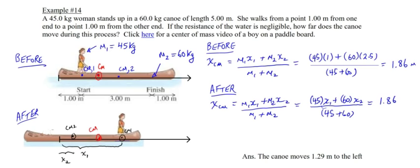So let me try to explain this. You see, she started one meter away from this end of the canoe. And remember, the center of the mass of this canoe is 2.5 meters from the edges. And then she ends up being on the other end of the canoe, one meter away.